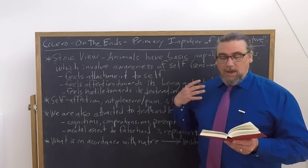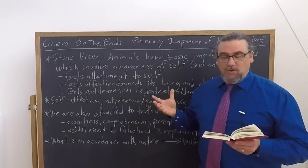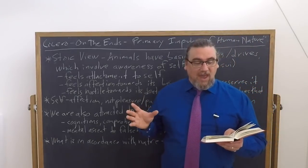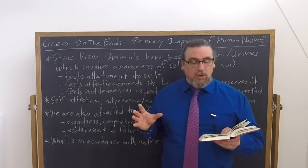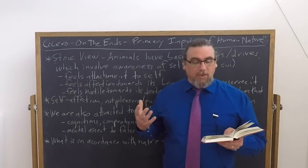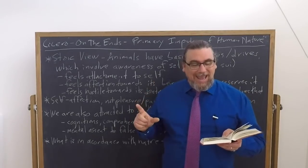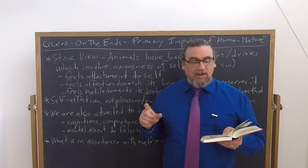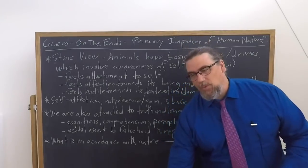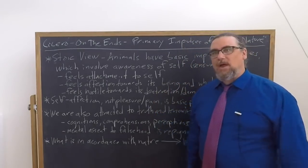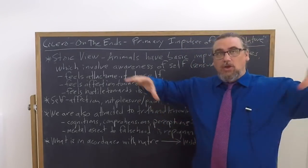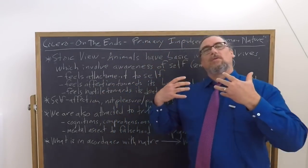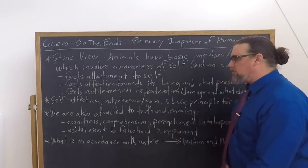So this is something that is among the primary impulses of human nature as well. And this leads us, he says, to children having pleasure in finding something out for themselves by the use of reason, even though they gain nothing by it. The sciences become things we choose for their own sake, partly because there's in them something worthy of choice, partly because they contain acts of cognition and contain an element of fact established by methodical reasoning. We like to use our mental faculties, just like we like to use our bodies to do things.